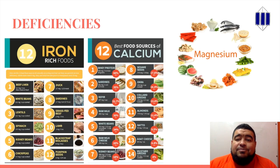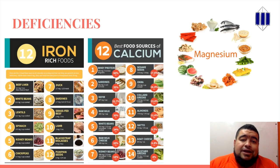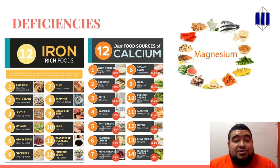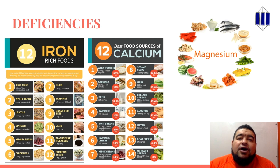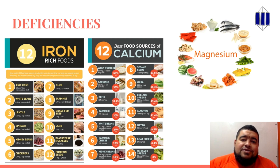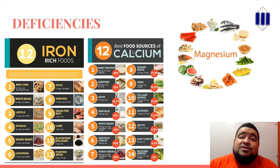Deficiencies — a lot of people can be deficient in iron, calcium, and all sorts of other vitamins, and they have to try to balance their diet around that. I know here it says there are 12 best food sources for calcium, but in fact there are 14.